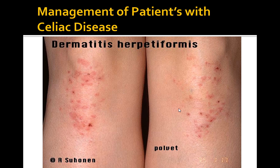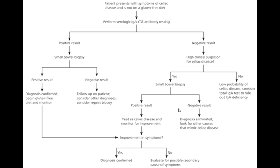Dermatitis herpetiformis is a rash that's associated with celiac disease. For a patient presenting with symptoms of celiac disease who is not on a gluten-free diet, first perform serological IgA tissue transglutaminase antibody testing. If positive, proceed to a small bowel biopsy. If the biopsy result is positive, the diagnosis is confirmed and you want to start a gluten-free diet and monitor the patient for any improvements.